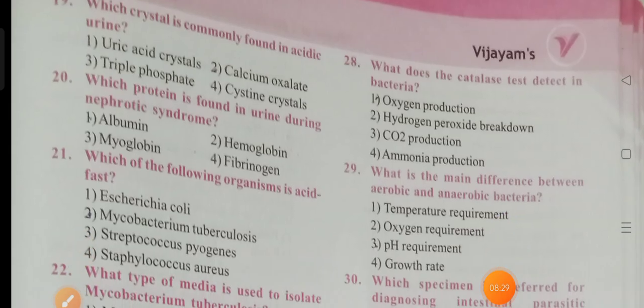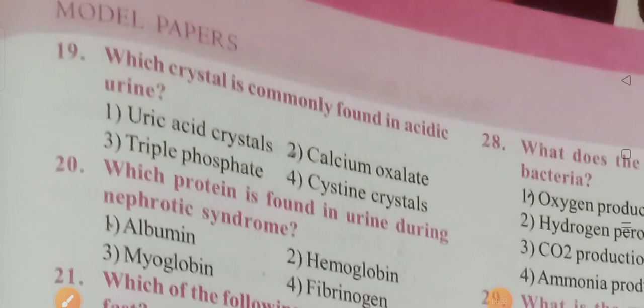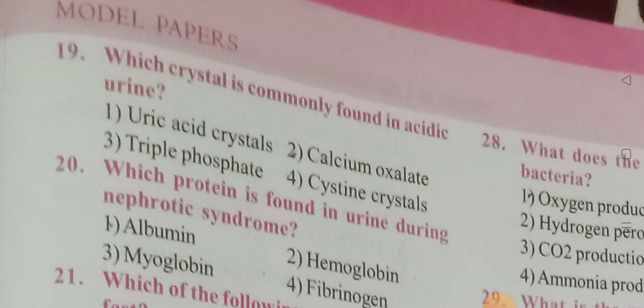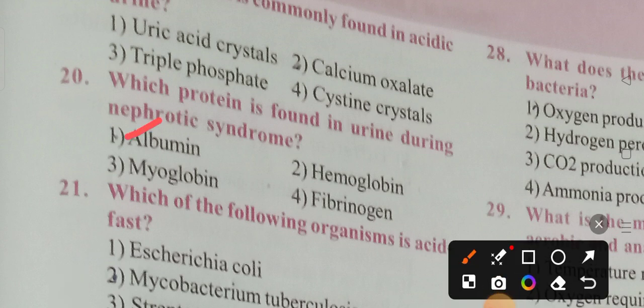Which crystals are commonly found in acidic urine? Options: uric acid crystals, calcium oxalate, triple phosphate, cysteine crystals. Option 2 is the correct answer — calcium oxalate. Which protein is found in urine during nephrotic syndrome? Options: albumin, hemoglobin, myoglobin, fibrinogen. Option 1 is the correct answer — albumin.